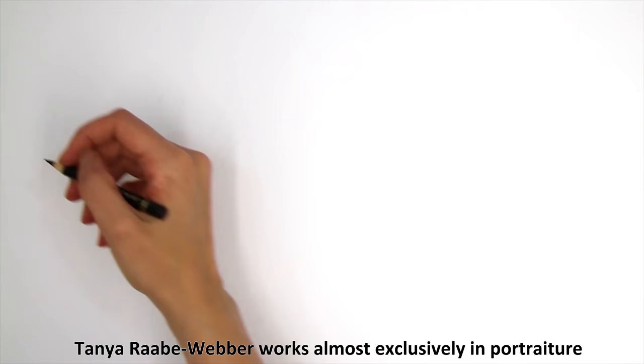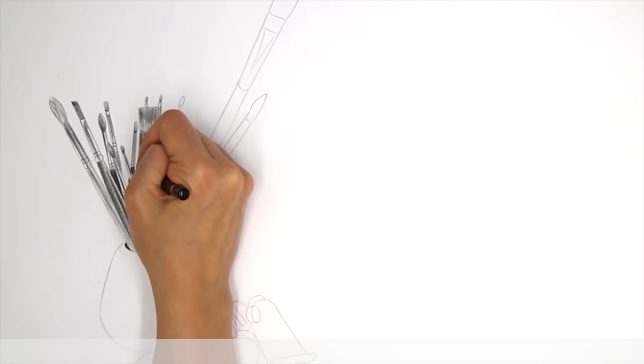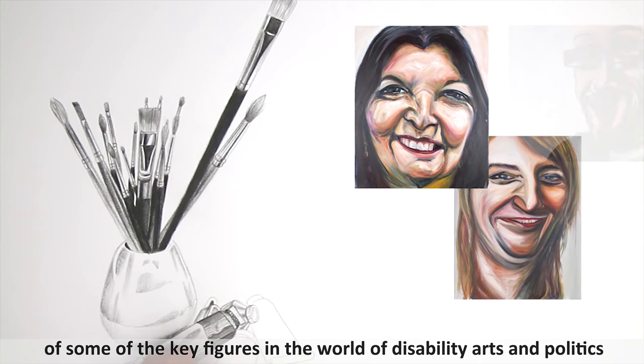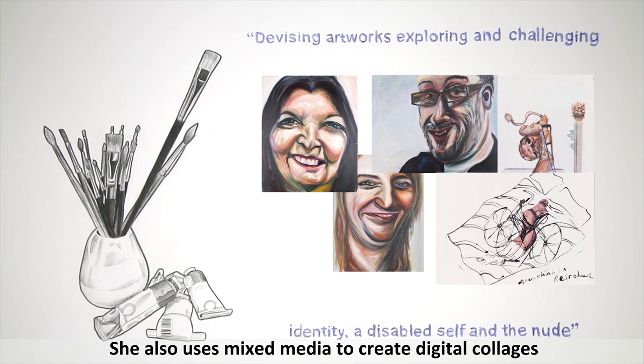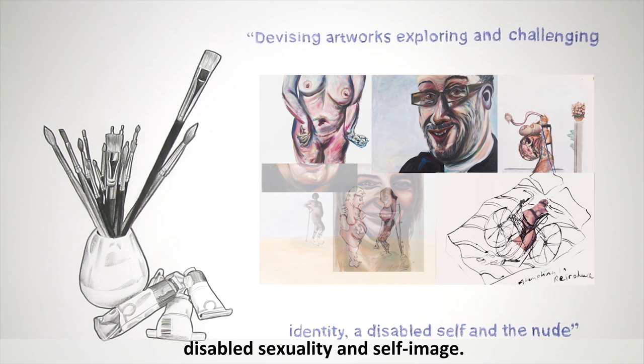Tanya Rabe Webber works almost exclusively in portraiture. She creates unique large-scale oil paintings of some of the key figures in the world of disability arts and politics, showing an easy confidence in their individuality. The portraits she creates are often nudes. She also uses mixed media to create digital collages that examine, sometimes painfully, disabled sexuality and self-image.